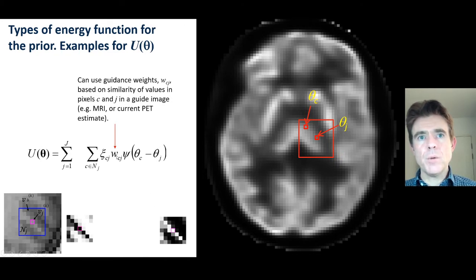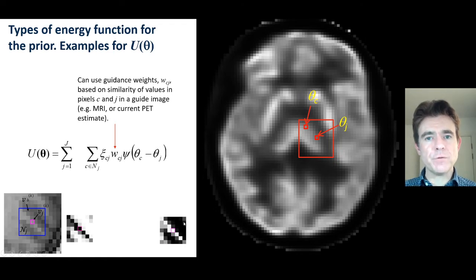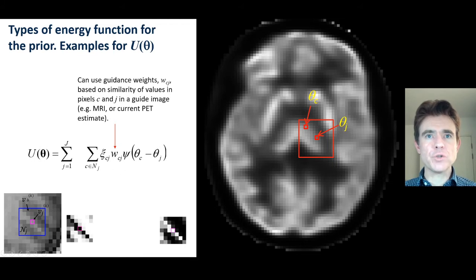Whereas in the other direction, the weights will be switched off and actually allow different PET intensities across that edge. This is effectively an edge-preserving set of guidance weights that modify the potential function.